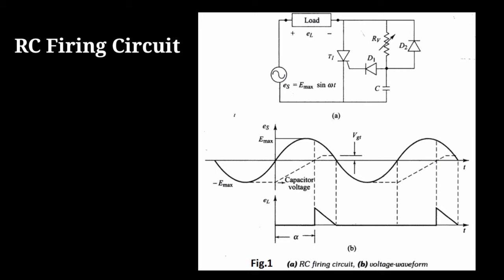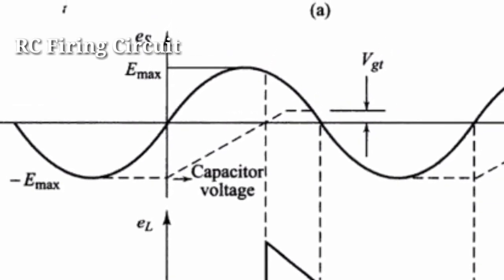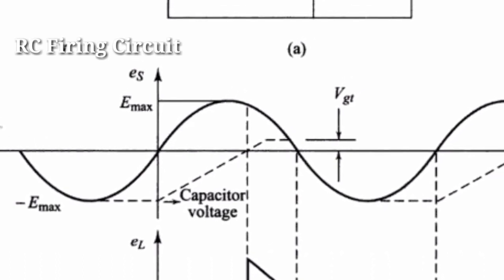By changing the phase and amplitude of gate current, by varying the resistance RV, the firing angle can be controlled from 0 to 180 degrees.